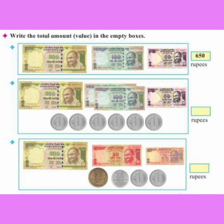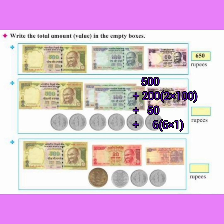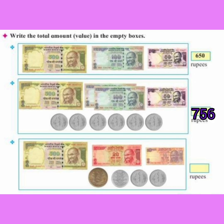Write the total amount in the empty boxes. 500 plus 100 plus 50 is equal to 650 rupees. 500 plus 2 into 100, which is equal to 200, plus 50, plus 6 into 1, which is equal to 6. So the total amount is 756 rupees.